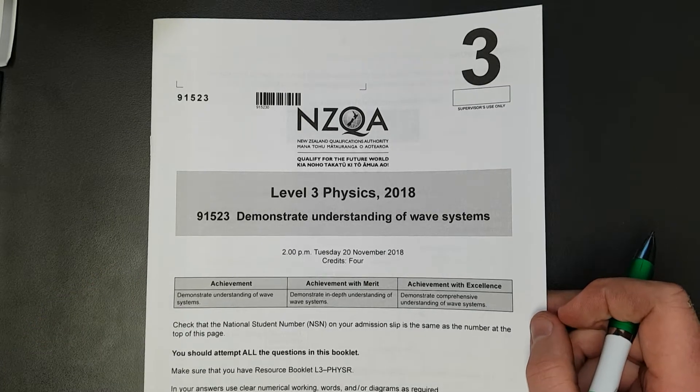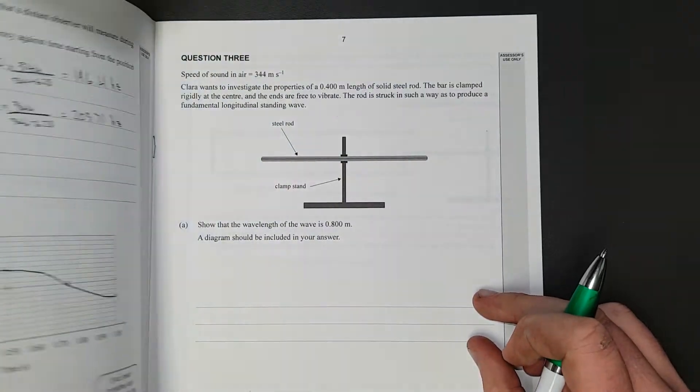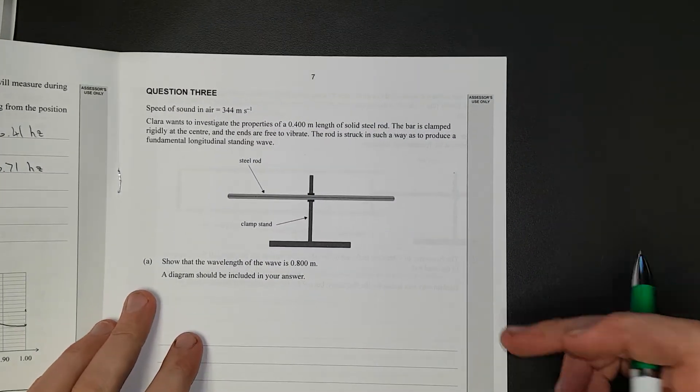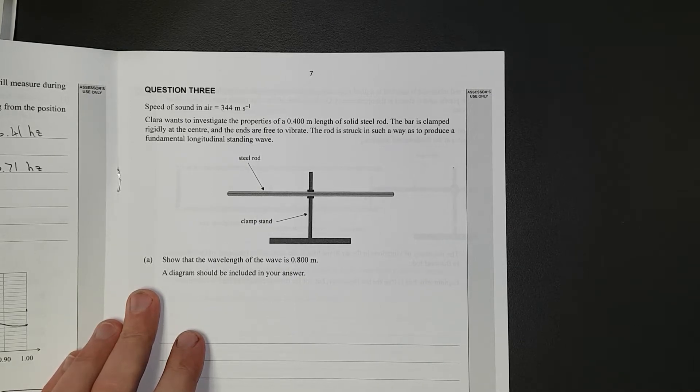For this video, I'll be working through question 3 of the 2018 Level 3 Waves exam. Question 3: Clara wants to investigate the properties of a 40cm or 0.4m length of solid steel rod. The bar is clamped rigidly at the center and the ends are free to vibrate.